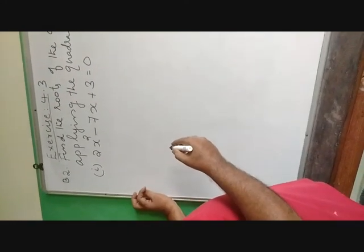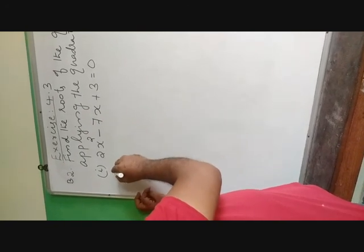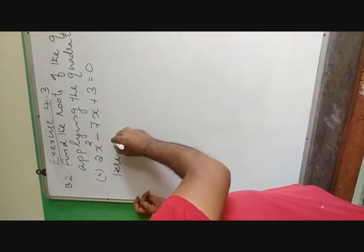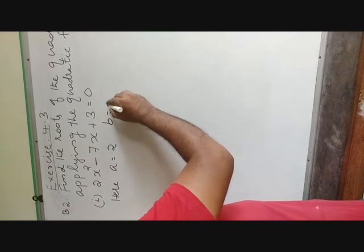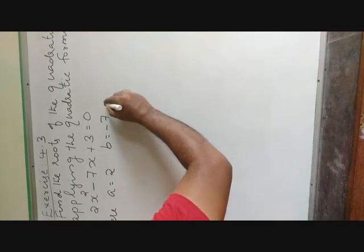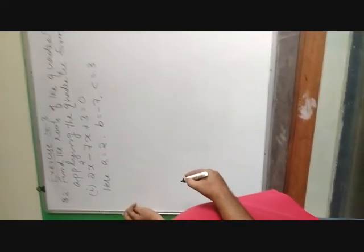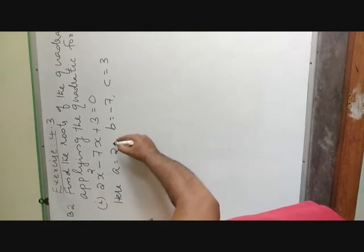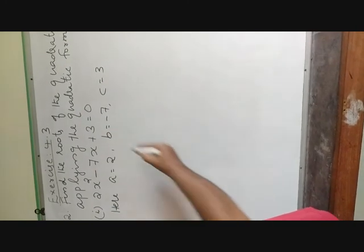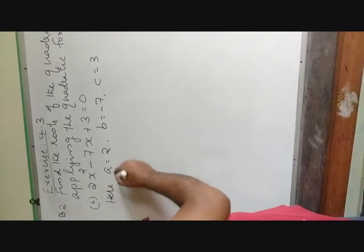For finding the answer, we can use the quadratic formula. A is equal to 2, B is equal to minus 7, C is equal to 3. A is the coefficient of x squared, that is 2; B is the coefficient of x, that is minus 7; and C is the constant term, that is 3.